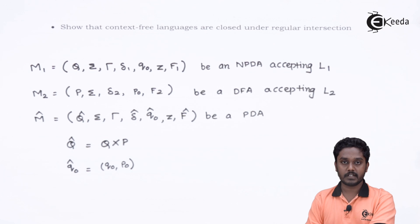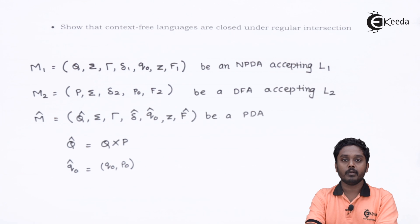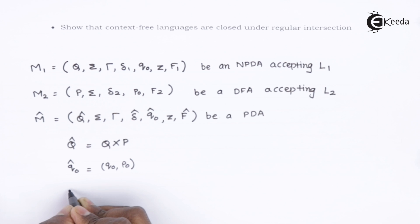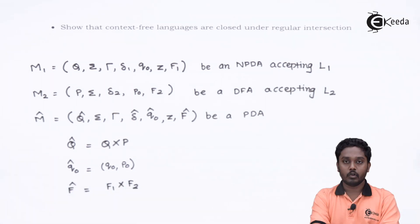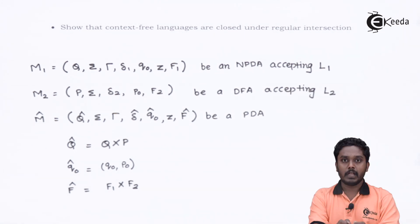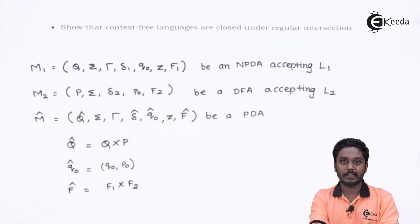The next component is the set of final states. Machine M-cap should reach final states only if final states are achieved by both M1 and M2. Hence, F-cap is a combination of F1 and F2. So for M-cap, we have defined: Q-cap — set of states; Sigma — alphabet; TAU — stack symbols; Q0-cap — initial state; and F-cap — final states. Now we need to define the transition function DELTA-cap.